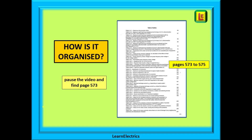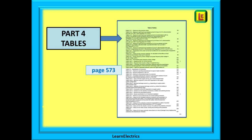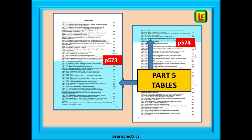Pause the video and find pages 573 to 575. Following what happens over the next few slides will help your understanding. The top half of page 573, shown here in green, is the section for part four — all the table numbers begin with the number four. The tables relating to part five are on the bottom half of page 573 and a few lines on page 574, and they all begin with the number five.